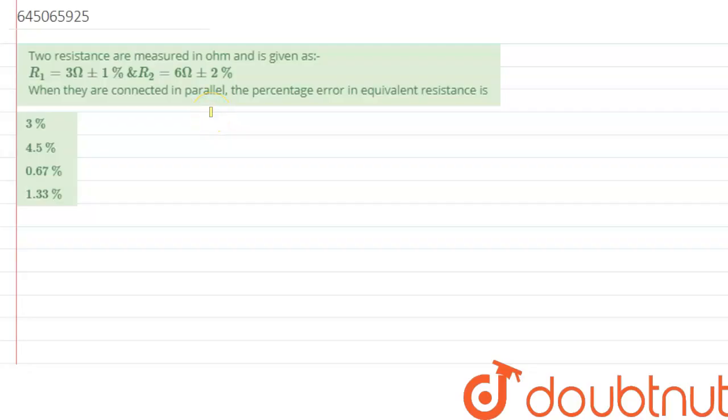There are two resistances measured in ohm and is given by R1 as 3 ohm plus minus 1%, that is there is a 1% error in resistance 1, and R2 has been given as 6 ohm plus minus 2%. So when they are connected in parallel, the percentage error in equivalent resistance is...